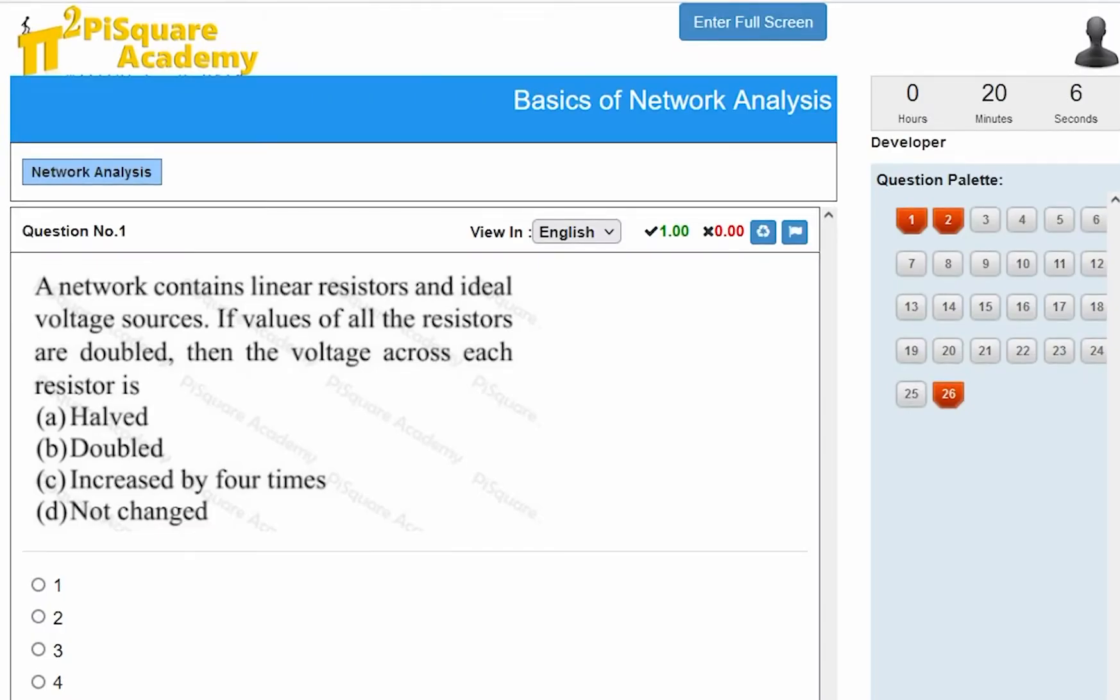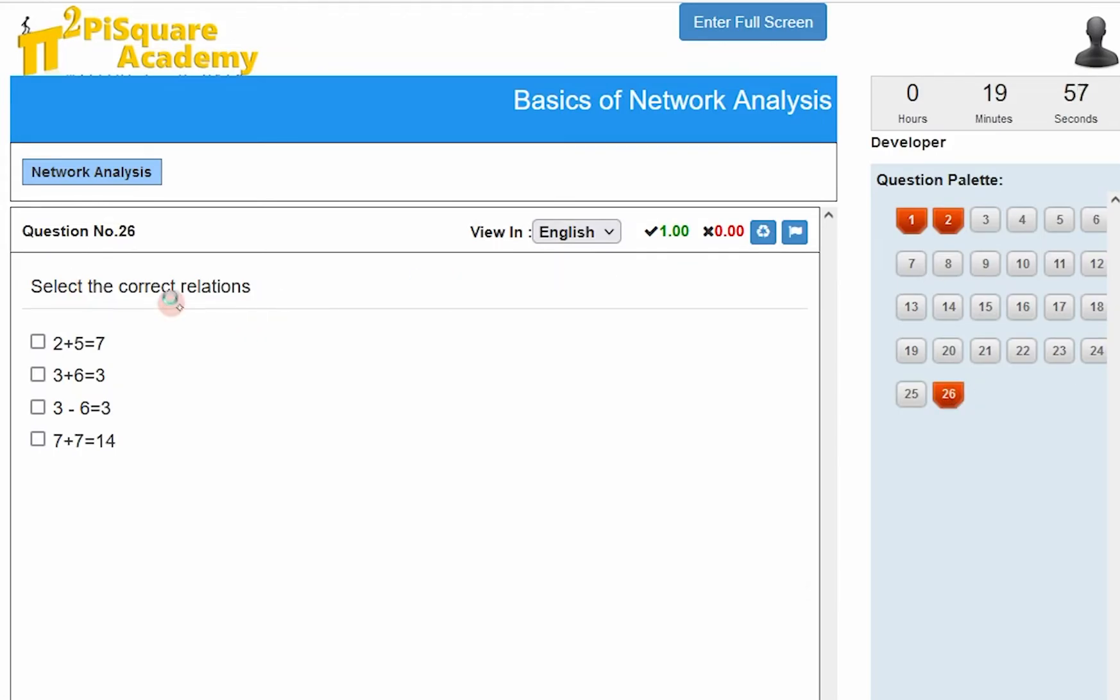You know about MSQs. For MSQs, this is what an MSQ will look like - you have 4 options. But for MSQs, multiple select questions, suppose this is a question.